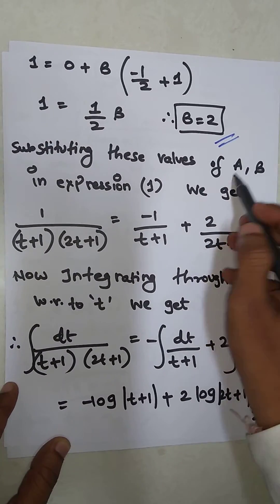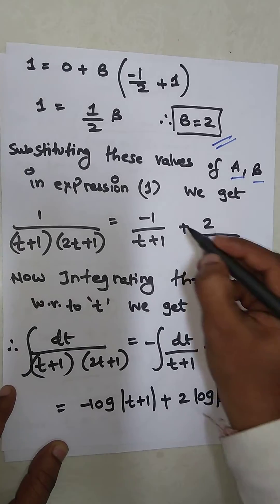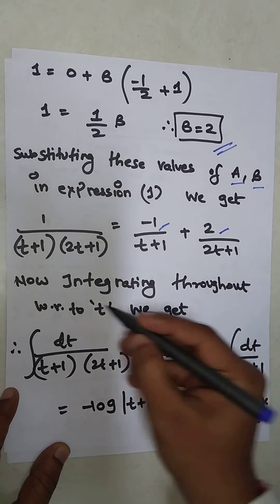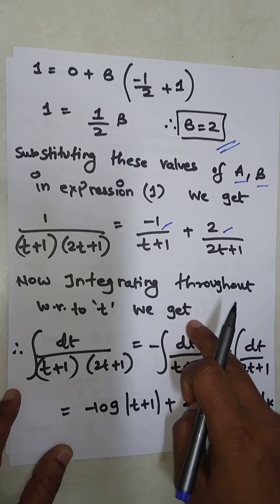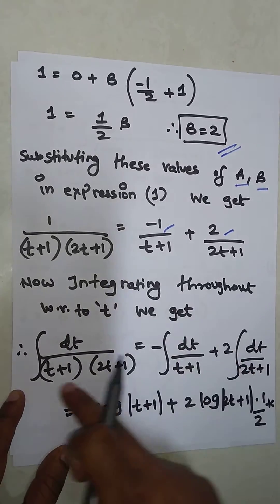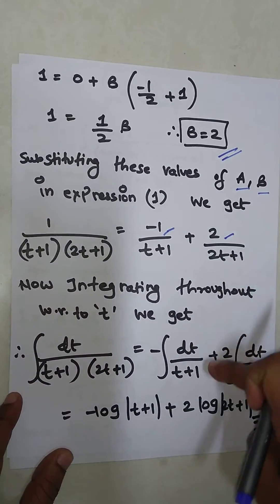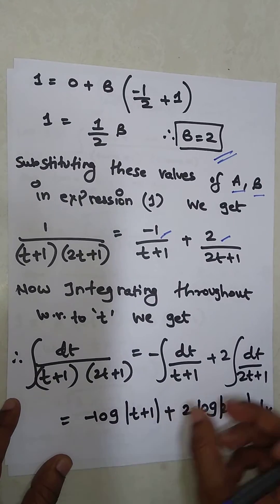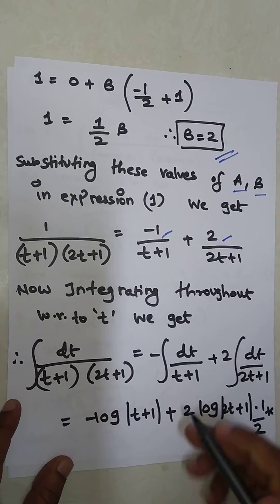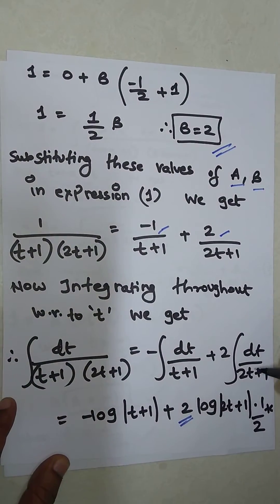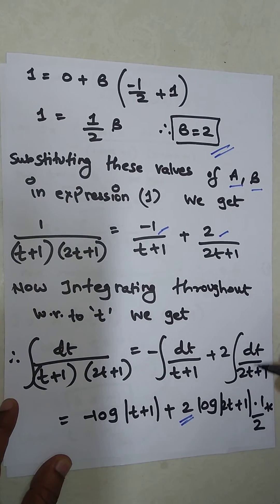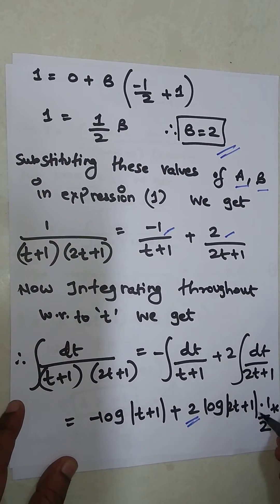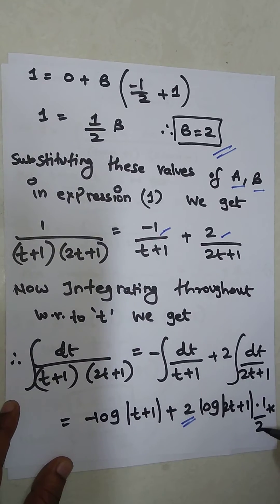Now substitute A and B back into the partial fractions and integrate throughout with respect to t. The integration of 1/(t + 1) gives log(t + 1). For 1/(2t + 1), since the integration of 1/x is log x, the result is (1/2) log(2t + 1), plus the constant C.